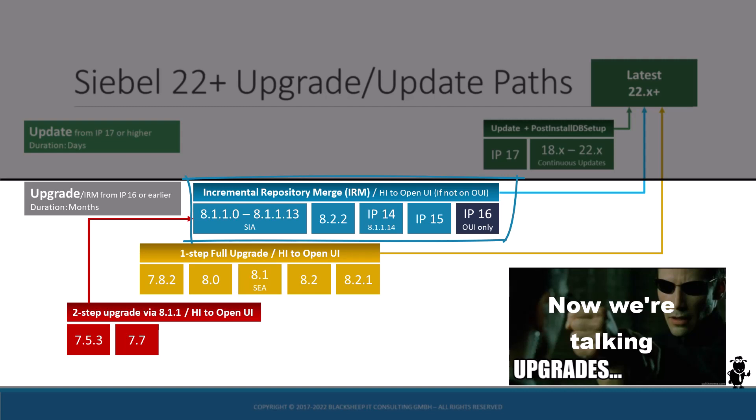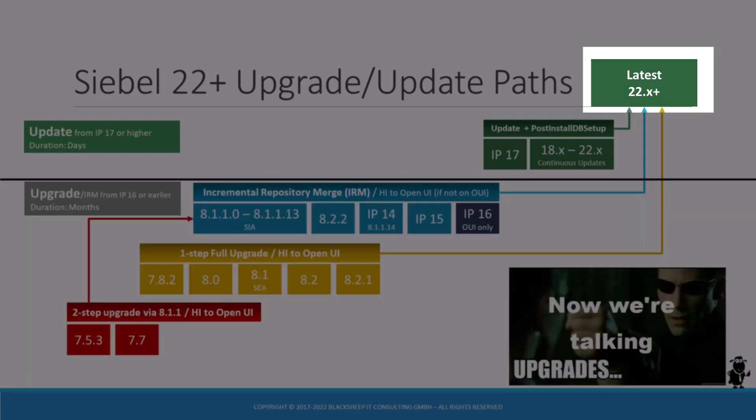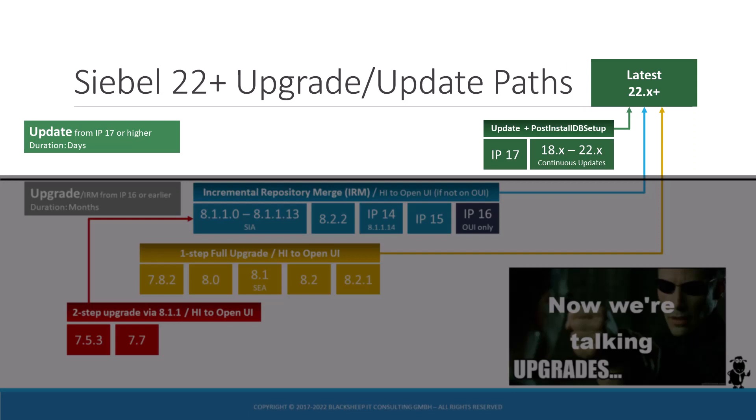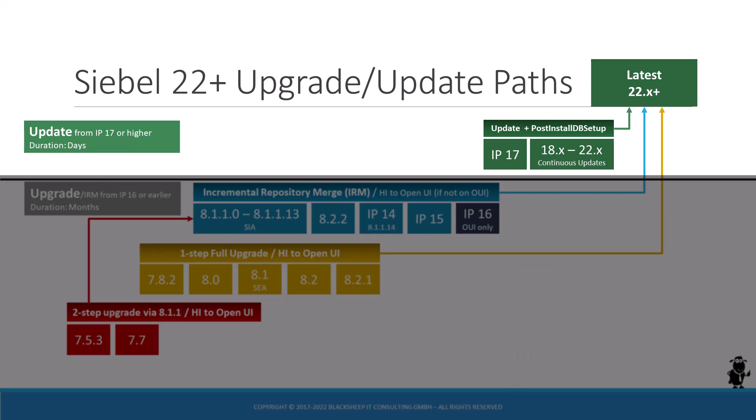Upgrade projects are conducted using an installation of the latest Siebel CRM release available at the time you start the project. If you already ran a successful Siebel upgrade to IP17 or higher, you no longer have to run a lengthy, costly upgrade project. To get from a post-IP17 release to the latest available update, you only have to execute the aforementioned update process. The real benefit of Oracle's continuous release model is evident here, as the update process will at most take a few person days.